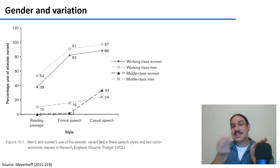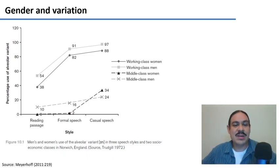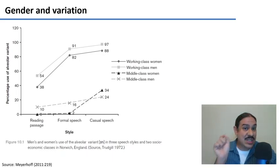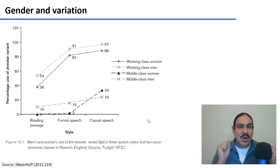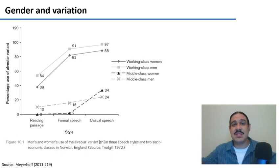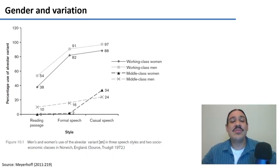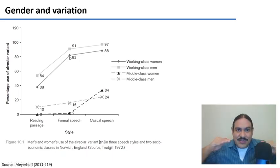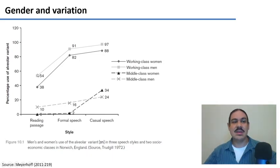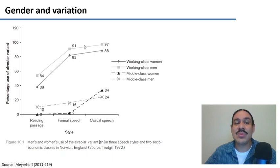That pattern relates social class to the speech you use. In a different experiment, sociolinguist Peter Trudgill worked in England with varieties of English that had 'ing' as in 'working' versus the alveolar 'in' as in 'workin'.' This chart shows the use of the alveolar variant according to class and whether people identified as men or women. Working class men are the ones who use 'workin'' with the alveolar the most.